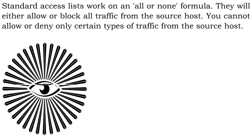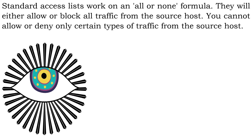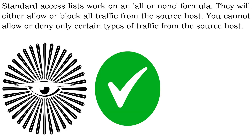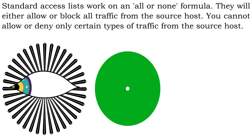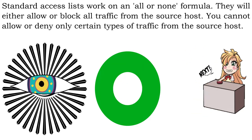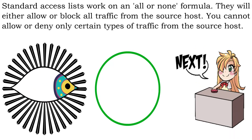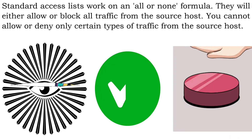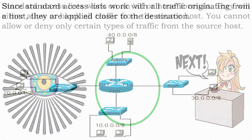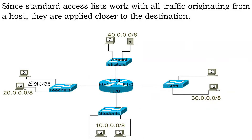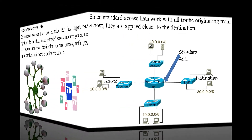Standard access lists work on an all-or-none formula. They will either allow or block all traffic from the source host. You cannot allow or deny only certain types of traffic from the source host. Since standard access lists work with all traffic originating from a host, they are applied closer to the destination.